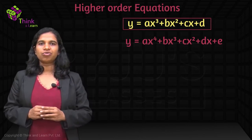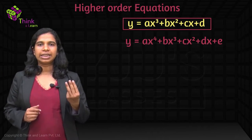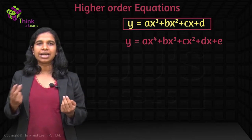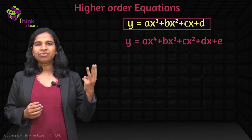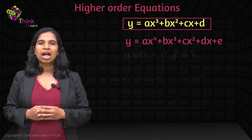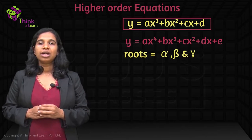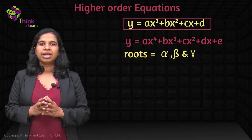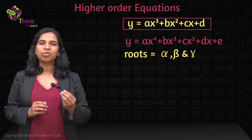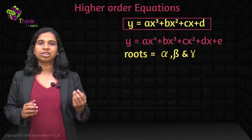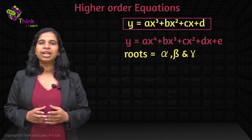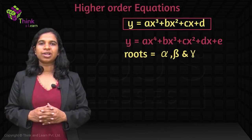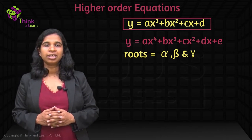So for a cubic equation, for example, how many roots will it have? 3, right? Degree 3, 3 roots. So it'll have 3 roots: alpha, beta, and gamma. Now when you're talking about real roots, it will always be a maximum of 3 real roots because some of these roots can also be complex. We've seen what complex roots are.